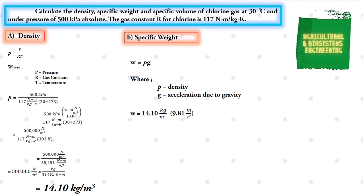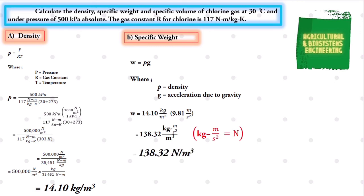Multiplying, we get a specific weight of 138.32 kilogram·meter per second squared per cubic meter. Since kilogram·meter per second squared is equivalent to newton, our final value for specific weight is 138.32 newton per cubic meter.